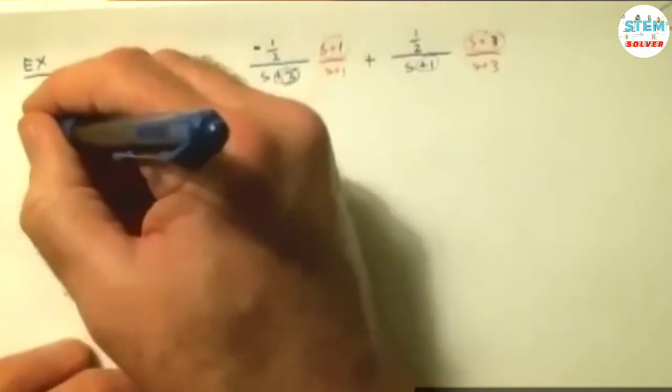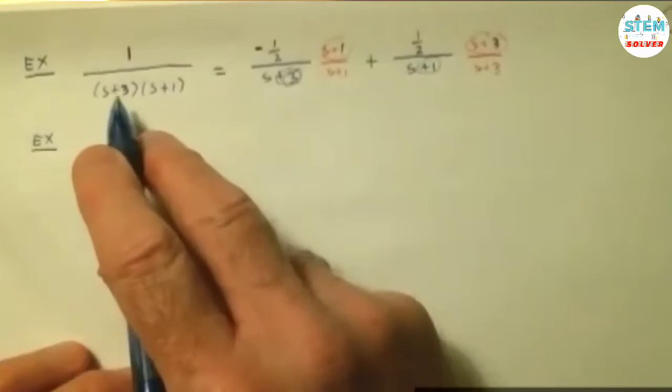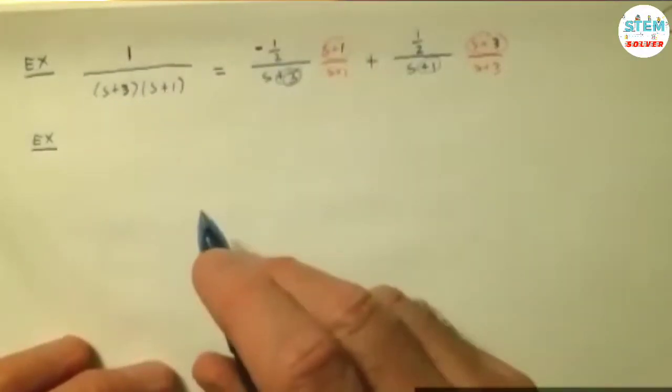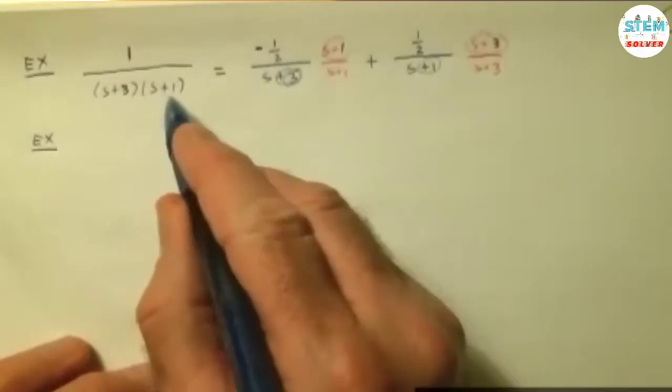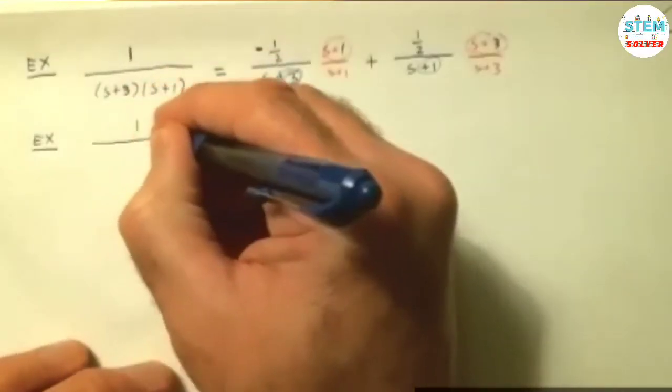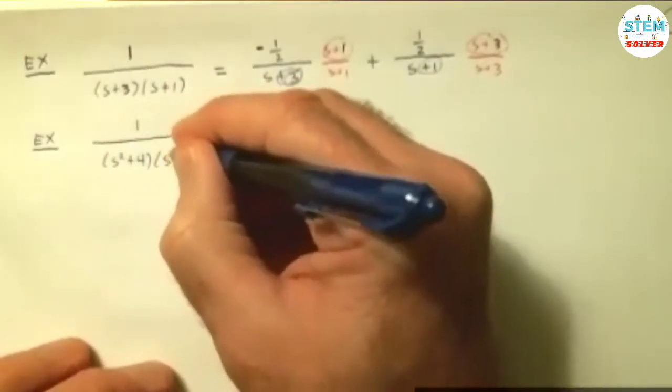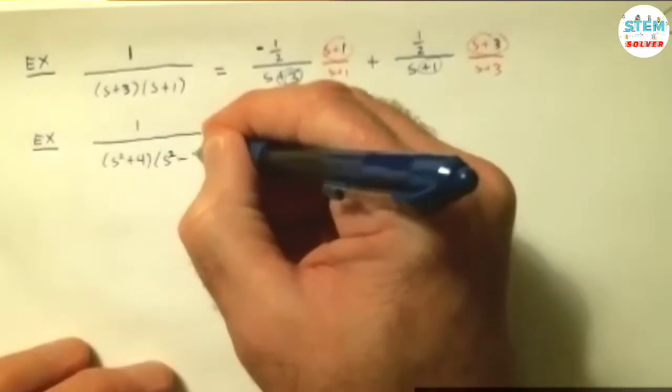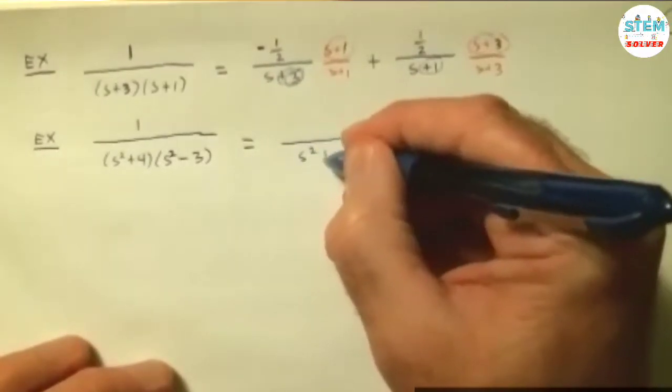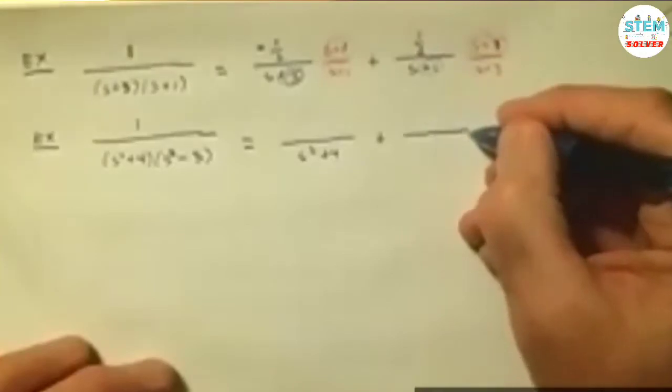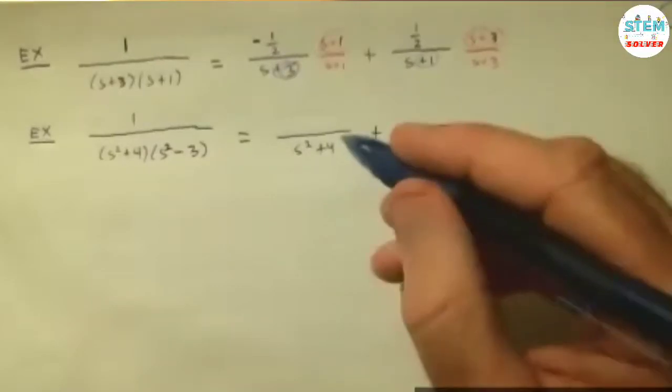I'll give you another one. Now, the thing about this is these have to match this form. If I have s squared plus 3 and s plus 1, you're not going to be able to do this. So, these factors have to be the same. They don't have to be s plus plus. They have to be the same though. So, I might have something like this. s squared plus 4 and s squared minus 3, let's say.